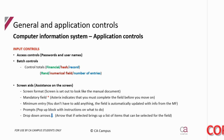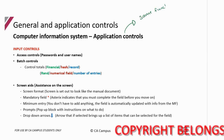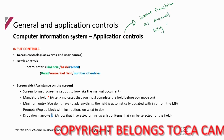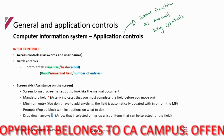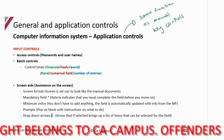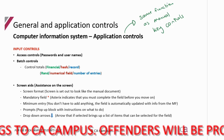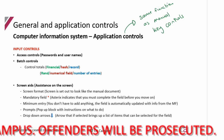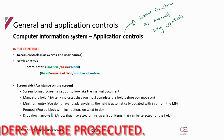We're going to look at the list of application controls, because I really want to stress that these have the same function as manual key controls. They are there to stop fictitious transactions from being recorded, to make sure that all transactions that should be recorded are, and to make sure transactions are recorded accurately. They're just new names and different ways of achieving that same goal.